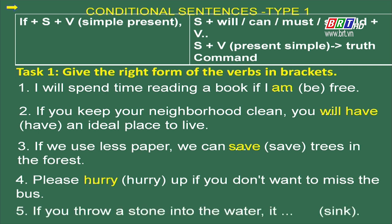Sentence 5: If you throw a stone into the water, it (sink). Bạn nào có đáp án will sink? Bạn nào có đáp án sinks? Cô chúc mừng bạn nào có đáp án sinks — tại sao? Nếu bạn ném một viên đá vào trong nước, nó chìm — câu này diễn tả một sự thật hiển nhiên, do đó mệnh đề chính phải sử dụng ở thì hiện tại đơn. Các em lưu ý những trường hợp đặc biệt này trong câu điều kiện loại 1.